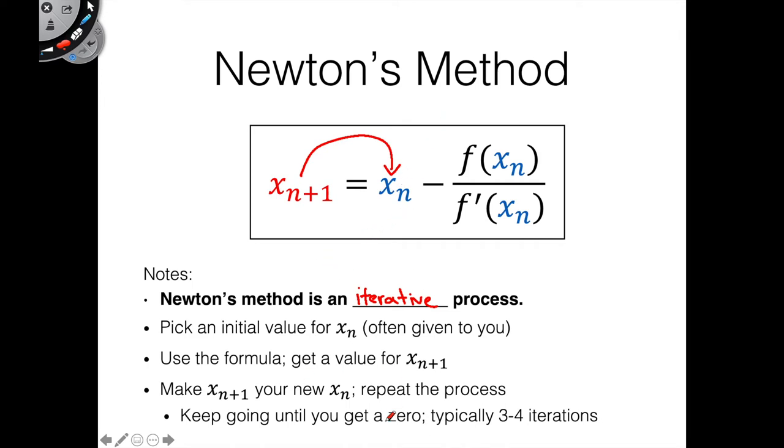You keep doing this until you get a zero for your function. Typically, this takes three to four iterations depending on where you start with this starting point. So let's look at an example just so you can kind of see what we're really doing here.